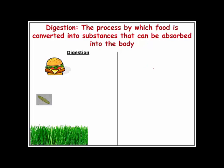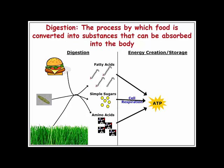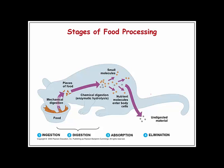Digestion is the process by which food is converted to substances that can be absorbed into our body. A hamburger, a protozoan, and grass can't be absorbed directly. What happens is they get converted into their components — fatty acids, simple sugars, and amino acids — which can then be used to create ATP through cell respiration or as raw materials to build body tissues.